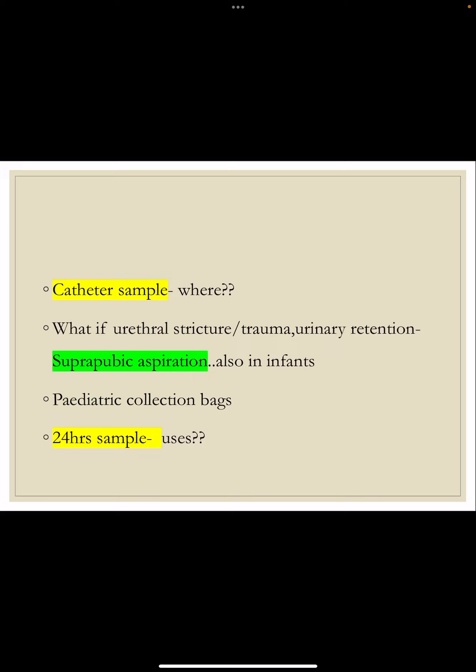Another method is the catheter sample, which can also be used for bacterial cultures. Here, a catheter is inserted directly into the bladder to take the sample. If there is a lesion in the urethra like a stricture, trauma, or urinary retention, we can also take a suprapubic aspiration — the sample is taken directly from the urinary bladder. Suprapubic aspiration can also be used in infants.